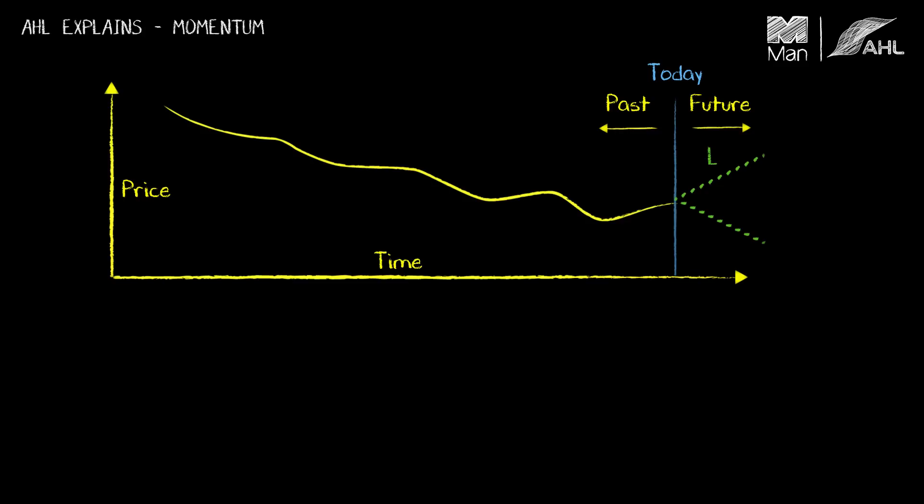Similarly, if the price goes down and we were to hold a short position, we would also make a profit, and you will make losses if you hold long positions when the price goes down and short positions when the price goes up. But forecasting which way the price is going to go over this future time horizon is the key to what we're trying to do here.